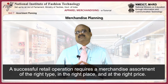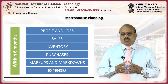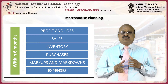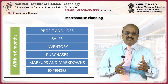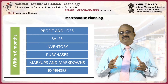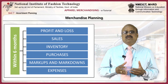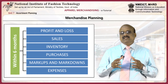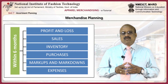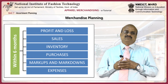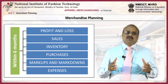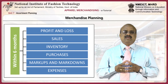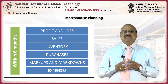A successful retail operation requires a merchandise assortment of the right type, in the right place, and at the right price. To accomplish this, activities such as profit and loss, sales inventory, purchases, markups, markdowns, and expenses must be planned at least six months in advance by buyers and managers. This plan is called a merchandise budget, also referred to as a six-month merchandise plan.